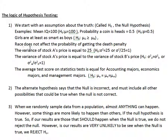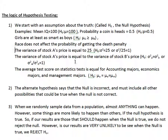Another hypothesis could be that race does not affect the probability of getting the death penalty in a certain country. We could also test whether the variance of stock A's price is equal to 25. We might think it's 25, but let's collect data to verify it — so the null hypothesis is that sigma squared equals 25. We can also write this as the variance divided by 25 equals 1, since 25 over 25 equals 1. When we test variances, a ratio is more convenient. We could also test that the variance of stock A equals the variance of stock B, written as sigma squared A divided by sigma squared B equals 1.